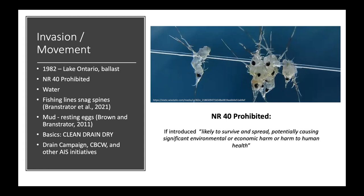Research by Brandstrator, Brady, and colleagues from the University of Minnesota, published this year, showed that trolled fishing lines are the number one risk for ensnaring and transporting spiny water fleas — far more risky than anchor ropes, downrigger cables, or other equipment. Mud is another vector: spiny water fleas produce resting eggs that settle into sediment. However, recent work by Brown and Brandstrator showed pretty high mortality in those resting eggs, so mud is maybe less risky than water or fishing lines, but we still don't want to be moving any sediment between lakes.